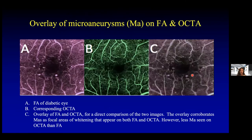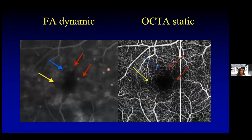Here's an interesting image showing an overlay of microaneurysms on fluorescein angiography — image A shows fluorescein with white microaneurysms, image B is the OCT angiography of the same eye, and in image C, the fluorescein and OCT-A are overlaid, showing that regions of microaneurysms correspond to small microaneurysms on OCT-A. However, there are differences between fluorescein and OCTA for microaneurysms because fluorescein is dynamic — the dye can pool in microaneurysms over time — while OCTA is static, showing the image at that moment. So if there's very slow or stagnant flow in a microaneurysm, it might not be shown on OCTA.